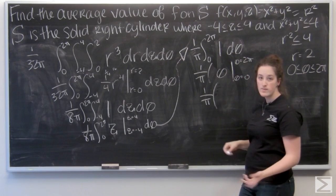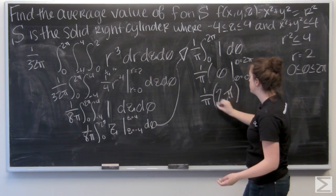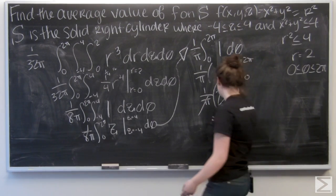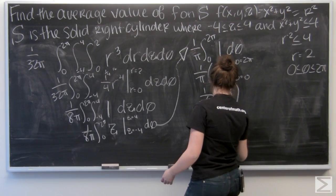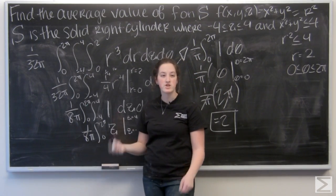So now I have 2 pi minus 0, which is 2 pi. My pi's will cancel out and I'm left with 2. So that's the average value of this function over our cylinder.